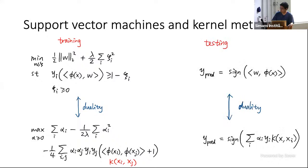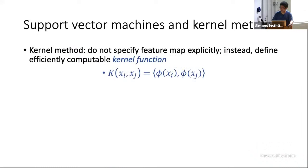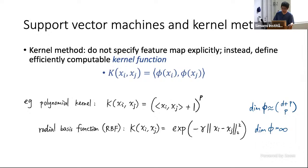This gives us a way to do training and testing in support vector machines with a high-dimensional feature map. The key point is that we can replace all of the high-dimensional vectors with the kernel matrix K. We can do the same thing in testing: after training, if we receive a new data example, we can compute the kernel and evaluate the classifier. This is known as the kernel method in machine learning, where we do not specify the feature map explicitly. Instead, we define an efficiently computable kernel function — a very popular trick in machine learning, with classical kernels widely used in practice that should be nonlinear.